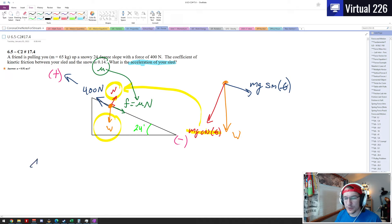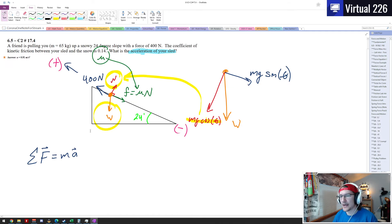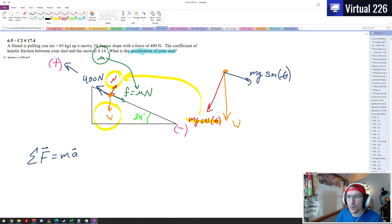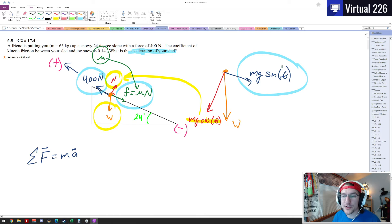Once we get to this point, it's just a matter of setting up the good old-fashioned F equals ma, the sum of the forces equals mass times acceleration. We've got three forces actually going up the plane or down the plane. We've got the 400 pulling you up, we've got friction pulling you back, and you also have your component of the weight pulling you back down the hill.